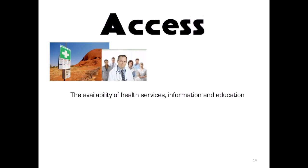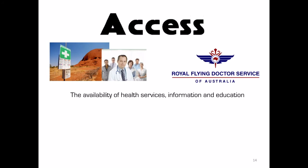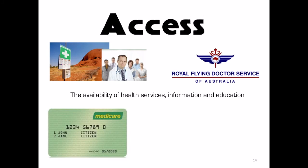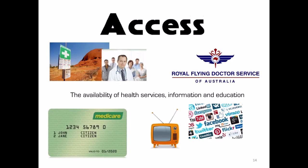Access includes the availability of health services, information, and education — people acquiring or accessing services such as hospitals. This could include placing more doctors in rural areas so that people can get check-ups more regularly to reduce cardiovascular disease prevalence. The Royal Flying Doctor Service is another example of providing services to those in very remote areas, increasing access. Medicare also increases access because you can see a doctor using your Medicare card. Access can also be improved through media campaigns on television and social media, and by providing messages in different languages so people of different nationalities can access them too. Providing more access can educate people, allow more check-ups, and reduce the prevalence of some diseases.